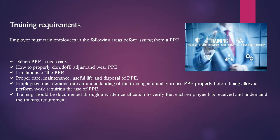Training requirements: Employers must train employees in the following areas before issuing them personal protective equipment — when PPE is necessary; how to properly put on, take off, adjust, and wear PPE; limitations of PPE; and proper care, maintenance, useful life, and disposal of PPE. Employees must demonstrate an understanding of the training and the ability to use PPE properly before being allowed to perform work requiring it. Training should be documented through a return certificate to verify that each employee has received and understood the training requirements.